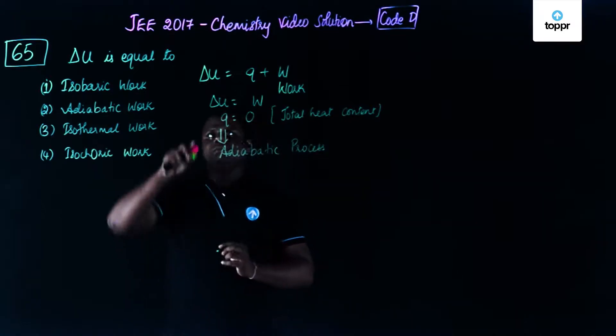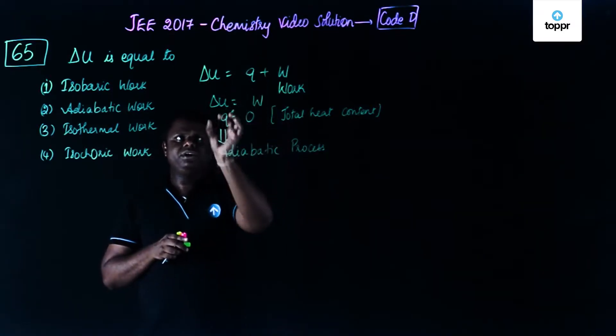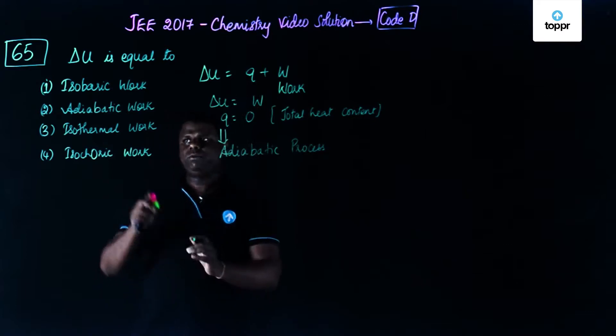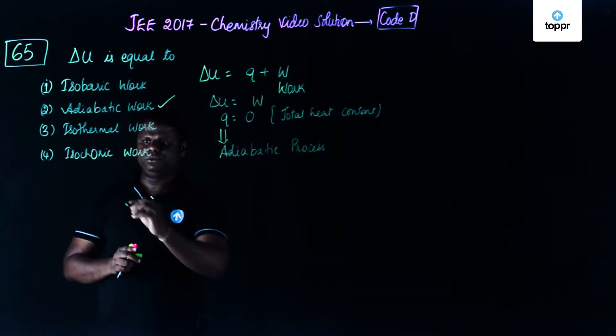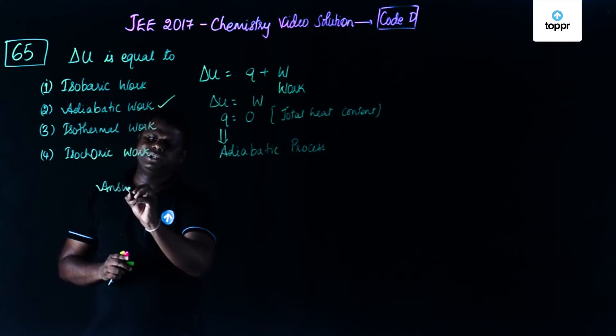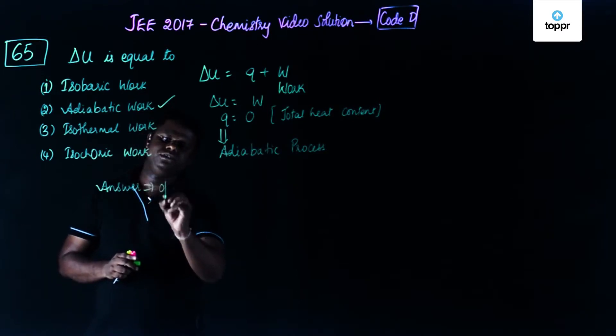That means you could simply say that when it is adiabatic process, delta U is equal to adiabatic work, which is basically option number 2. So the answer to this particular question is option 2.